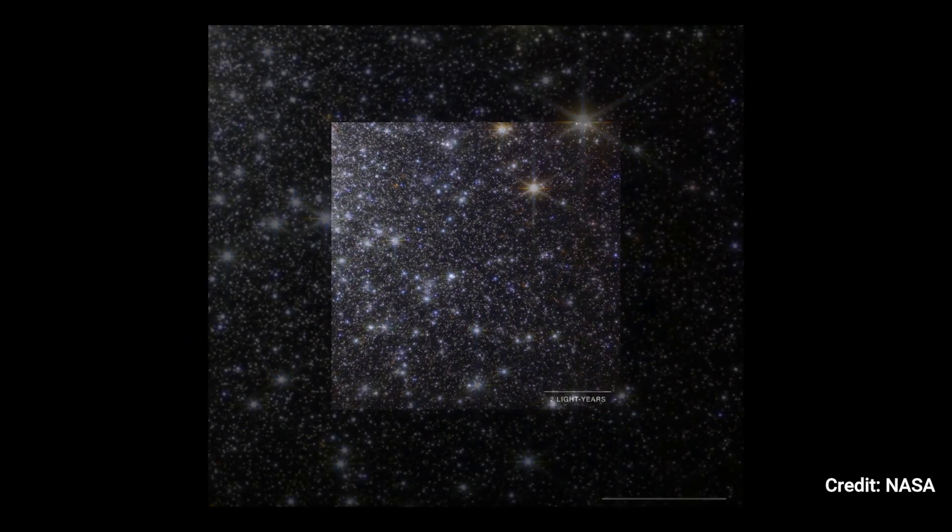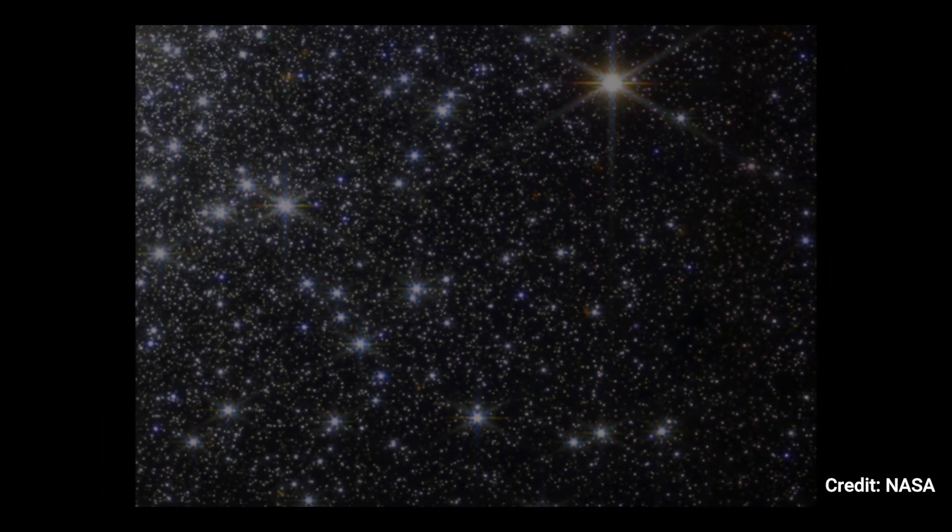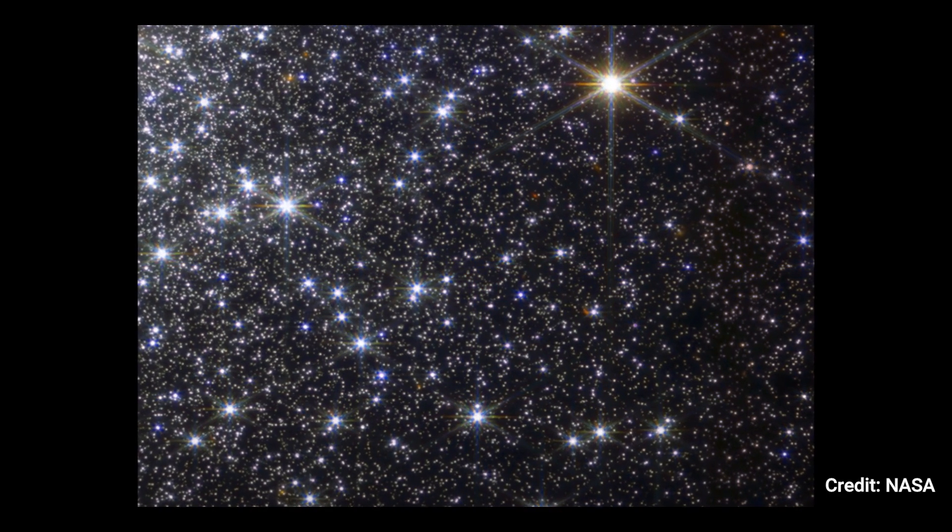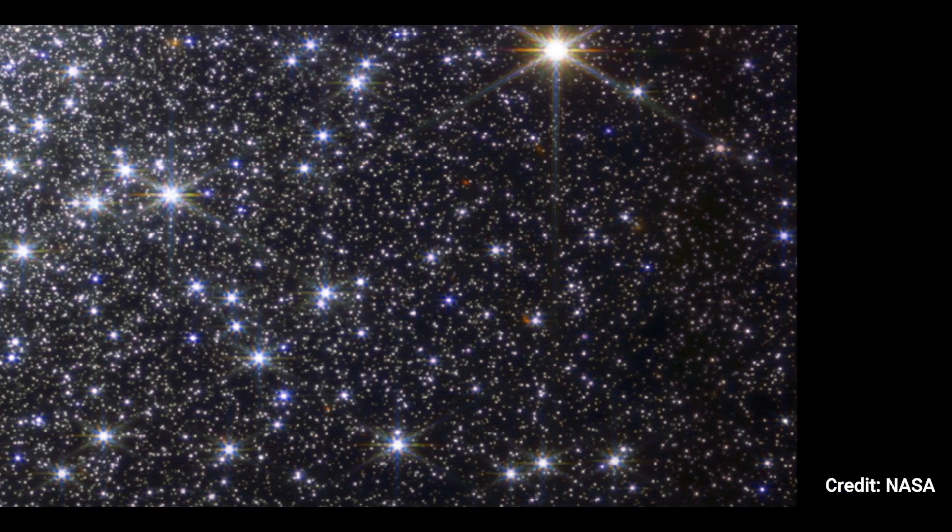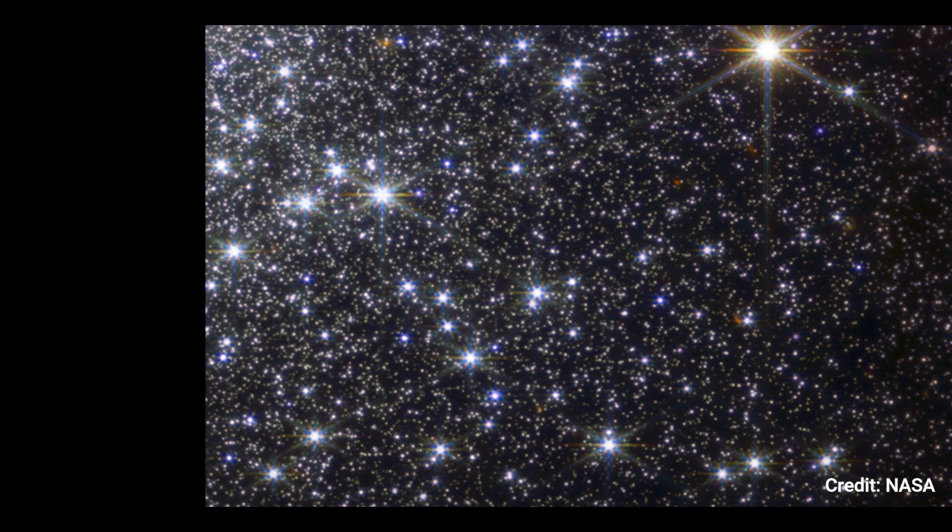The night sky of a planet in the center of M92 would be illuminated by thousands of stars, thousands of times brighter than those in our own sky. The image depicts stars at various distances from the cluster's core, which aids scientists in understanding the motion of the stars and the mechanics of that motion.